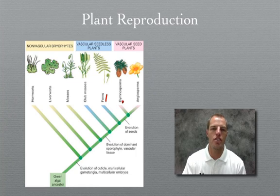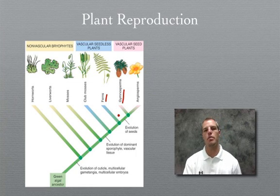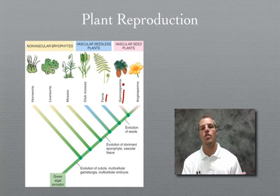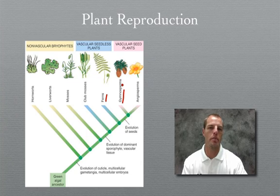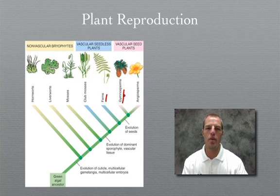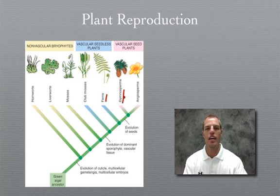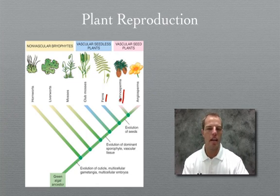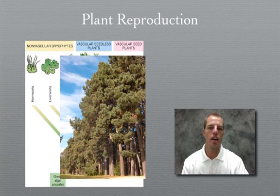The next group is the gymnosperms. Gymnosperms are vascular, meaning they can transport nutrients, and they can get very large. A pine tree, which we'll be talking about today, can get very large. They reproduce with what we call a naked seed, meaning the seed is not housed within a fruit — it's actually exposed. One example of that is our pine tree here, which we'll be using as our example.